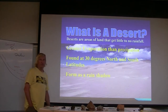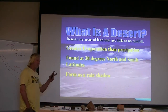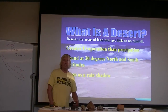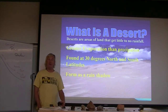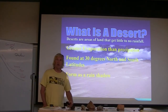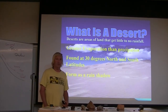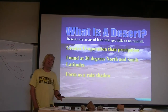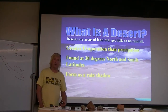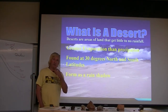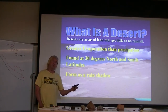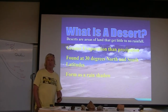So what is a desert? By definition, a desert is an area that receives greater evaporation — meaning water leaving — than precipitation, water coming in. So it's kind of a negative budget. More water leaves the desert than comes in.